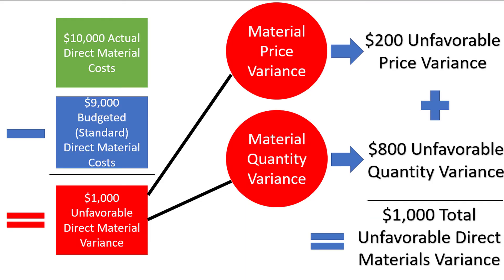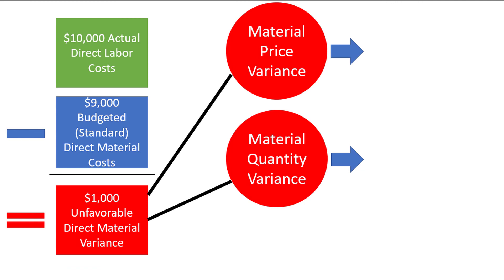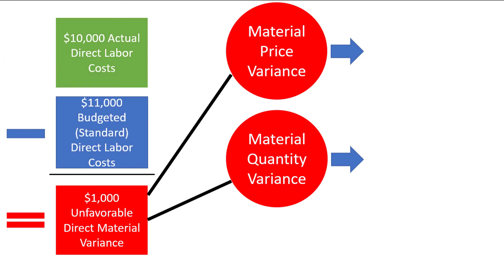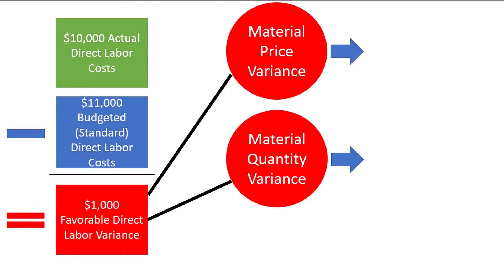We can apply standard costing to direct labor costs as well. We will change the labels so that they are appropriate for labor variances. Instead of materials being purchased, we now have labor being purchased in the form of an hourly rate paid to our workers. Labor costs will also have a budgeted standard, to which there can be deviations, creating variances. Let's let the budget be larger than the actual labor costs, creating a $1,000 favorable variance. The $10,000 of labor costs are less than the $11,000 budget, which is why the variance is favorable.